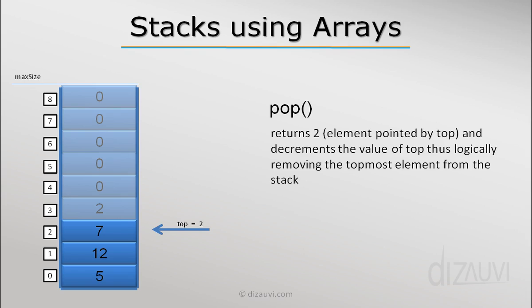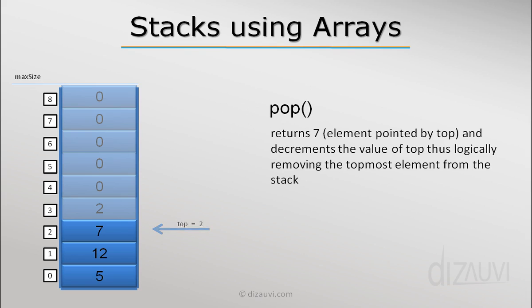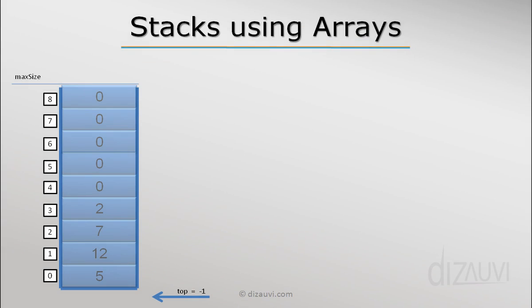Similarly, we can remove element 7 by returning 7 and then decrementing the value of top by 1. Now if we remove all the elements of the stack and the value of top is -1 again, we can say that the stack is empty.